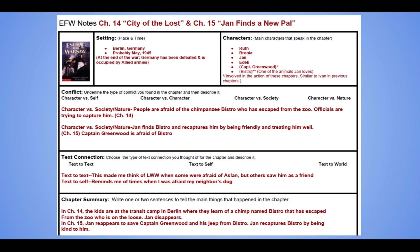The setting of chapter 14, City of the Lost, and chapter 15, Jan Finds a New Pal, both have the same setting. They both take place in Berlin, Germany. It's probably around 1945. One of the chapters specifically says that it's May. We know that it is at the end of the war because Germany has been defeated and the Allied armies are occupying Germany. So we've got the Russian army there, the British army there, and eventually we're going to find out that the American army is there as well.